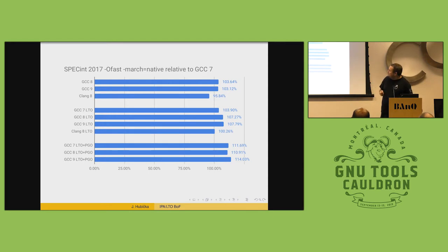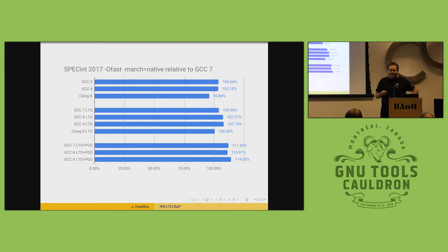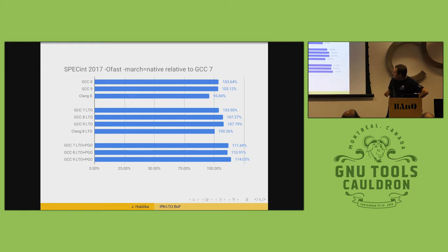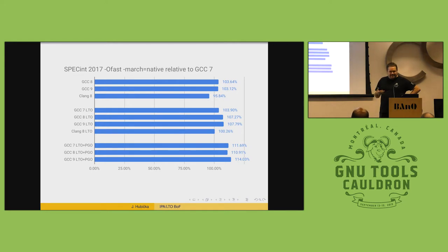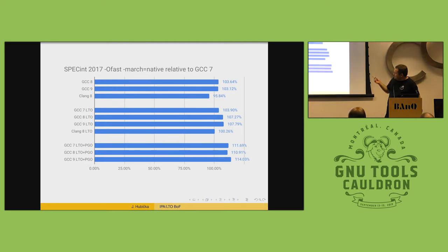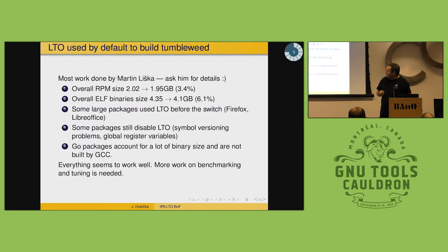This is SPEC FP — a similar situation. I was able to include Clang because Clang can build SPEC. You can see that Clang also gets about 5% from LTO, which is slightly more than GCC 7 and slightly less than GCC 10. One thing is that Clang reruns all optimization pipelines, so it also gets some benefits from simply doing everything twice. With PGO, I think we do well, but I don't have Clang numbers unfortunately.